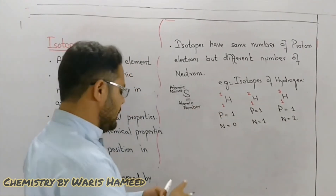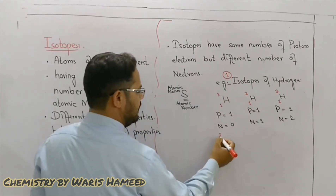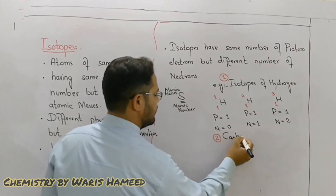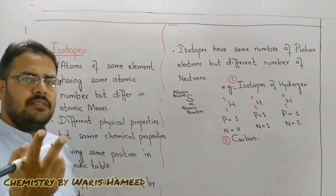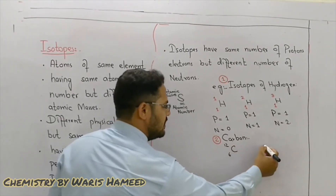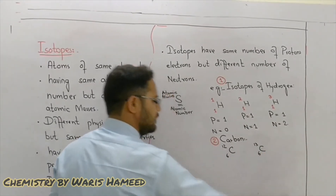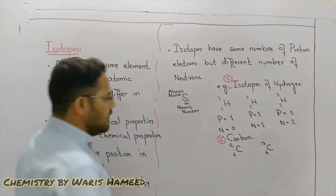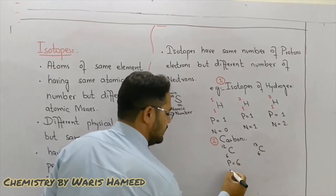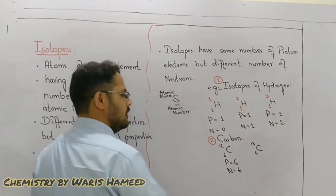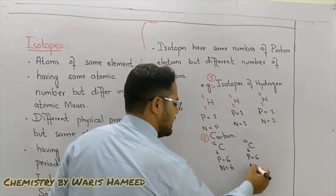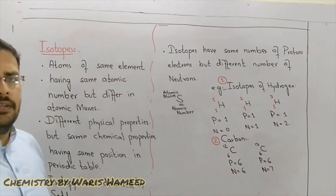Another example is carbon. Carbon has two isotopes: carbon-12 and carbon-13. In the case of carbon-12, there are 6 protons and 6 neutrons. In the case of carbon-13, there are 6 protons but there are 7 neutrons.